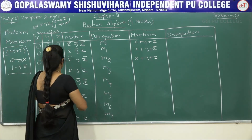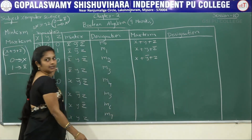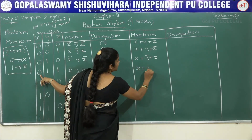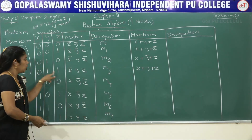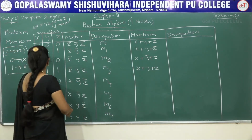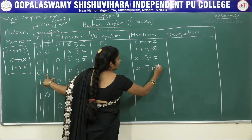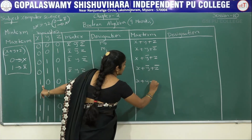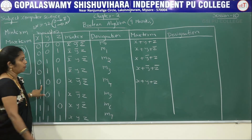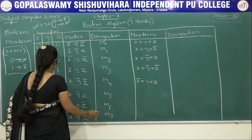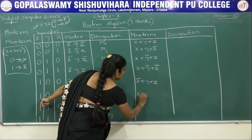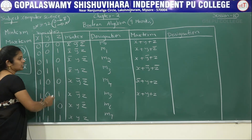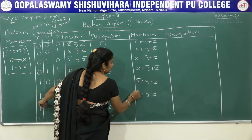Continuing the maxterm enumeration: row (0,0,0) → x+y+z (no complements since all are zero); row (0,0,1) → x+y+z̄ (only z gets a bar); row (0,1,0) → x+ȳ+z; row (0,1,1) → x+ȳ+z̄; row (1,0,0) → x̄+y+z; row (1,0,1) → x̄+y+z̄; row (1,1,0) → x̄+ȳ+z (first and last get bar since positions are 1 and 0 interpreted correctly).